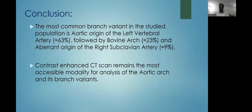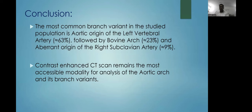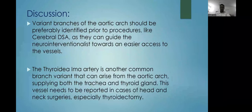In conclusion, the most common branch variant in the studied population was the aortic origin of the left vertebral artery, followed by bovine arch, followed by the aberrant origin of the right subclavian artery. Contrast-enhanced CT scan remains the most accessible modality for analysis of the aortic arch and its branch variants. Variant branches should be identified prior to procedures such as cerebral DSA, as they can guide the neuro-interventionist toward easier access to the vessels.